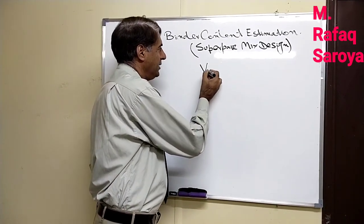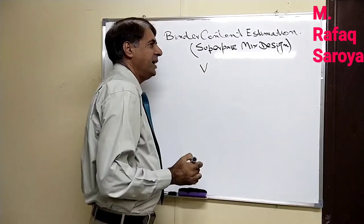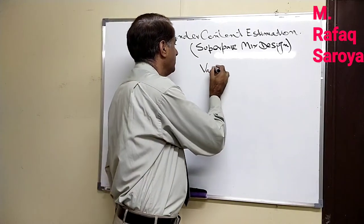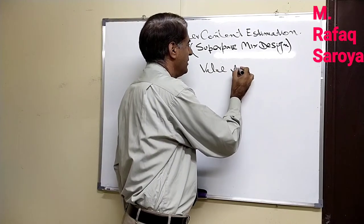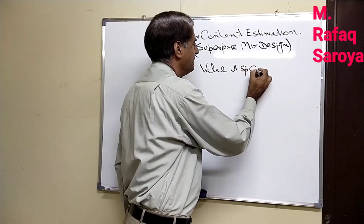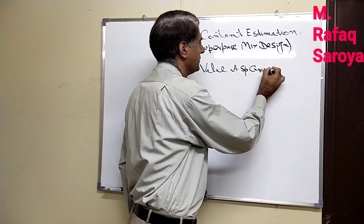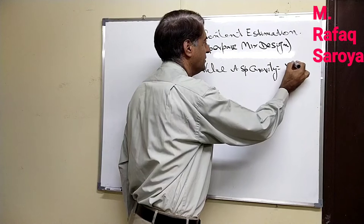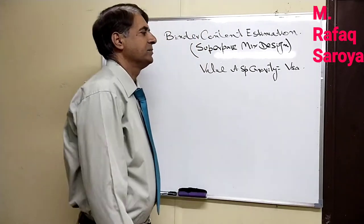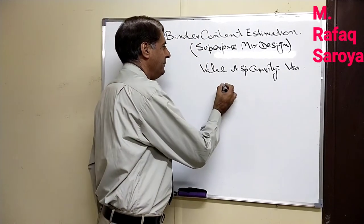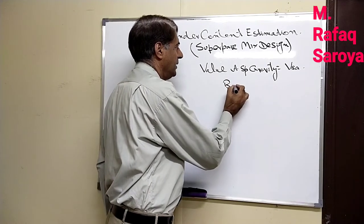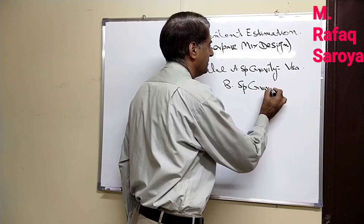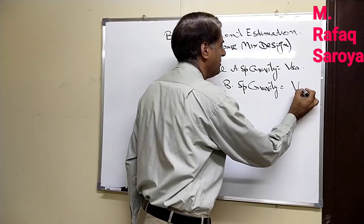We have the value of the apparent specific gravity, which is represented by GSA. We have the bulk specific gravity, which is represented by GSB.